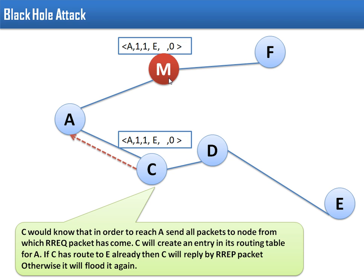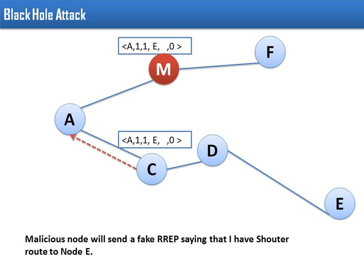Node M is also not having any information about node E, and this node is not connected to node E. So now this node will create a fake route reply packet, and this route reply packet will say that in order to send any data packet to E, forward all those packets to node M.